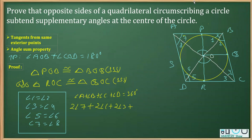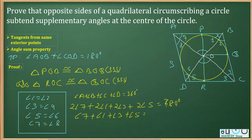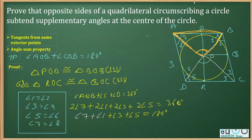Replace angle D with 2 × angle 5, giving: 2(angle 7 + angle 1 + angle 3 + angle 5) = 360°. Dividing both sides by 2: angle 7 + angle 1 + angle 3 + angle 5 = 180°. Now consider angles 1 and 7 in triangle AOB: angle 1 + angle 7 + angle AOB = 180°, so angle 1 + angle 7 = 180° − angle AOB.